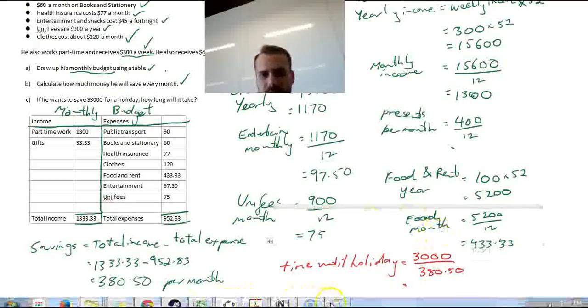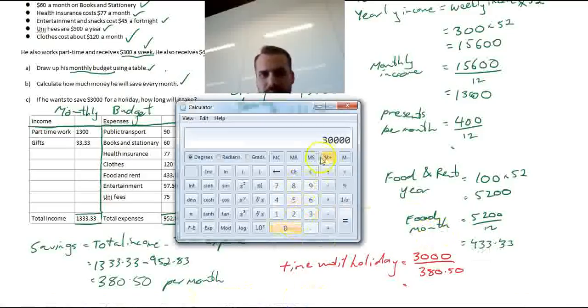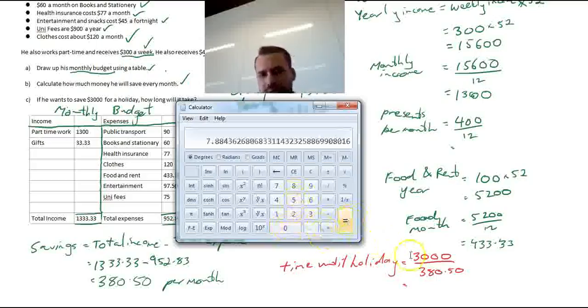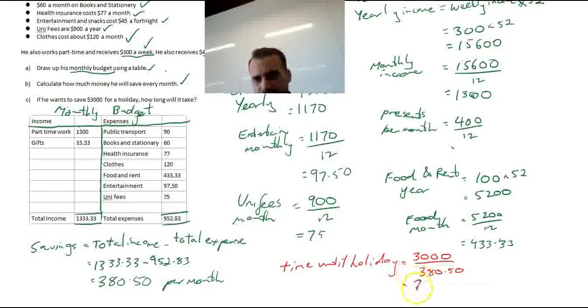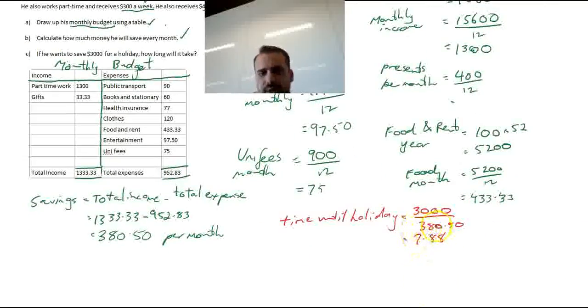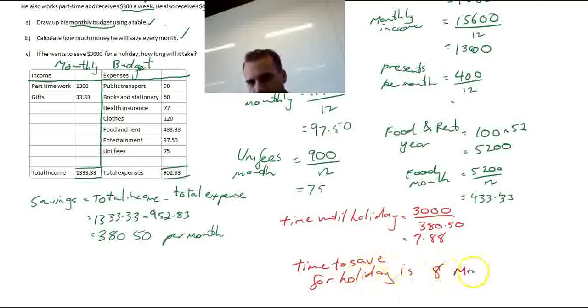And that'll equal $3,000 because that's how much we need divided by $380.50 because that's how much we're saving every month. Now, when we calculate that, $3,000 divided by $380.50, it gives us $7.88. We can probably round that up and say, time to save for holiday is 8 months.